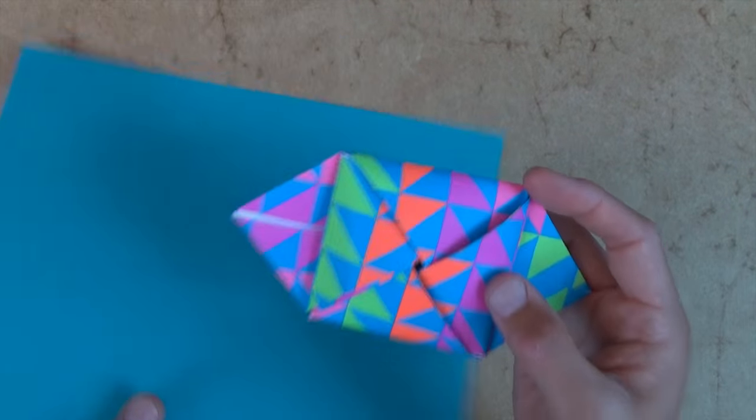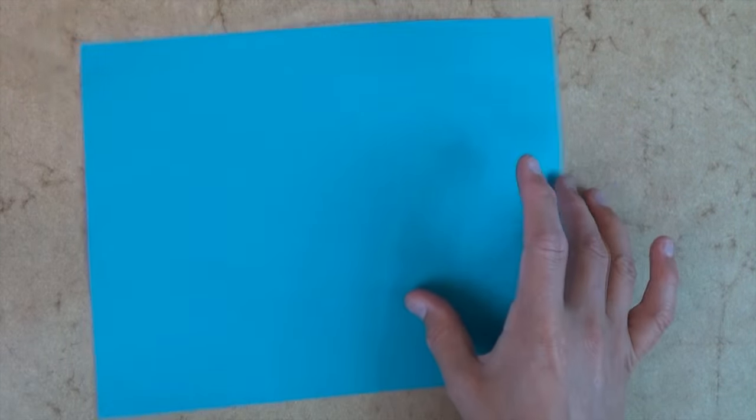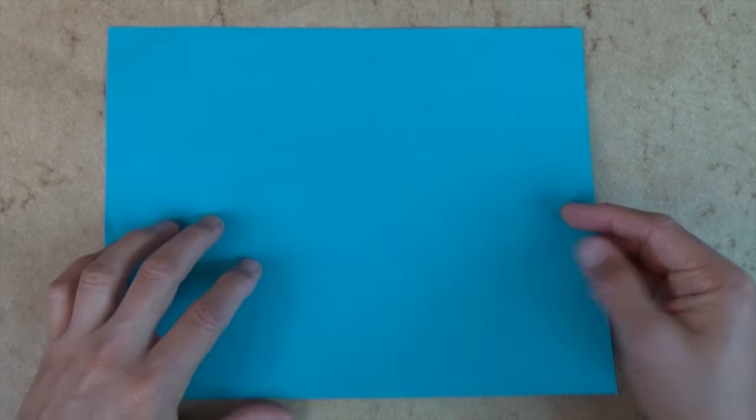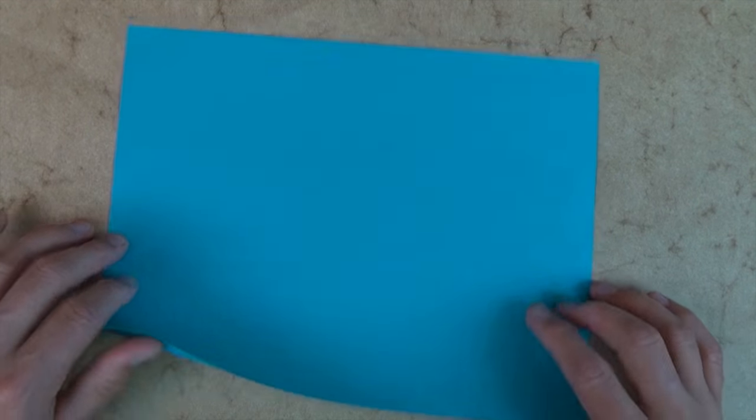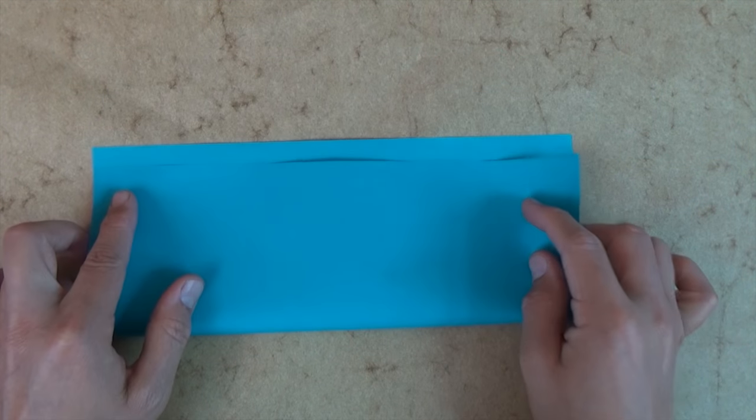Okay, so for this model we're going to use a sheet of printer paper. Eight and a half by eleven or three by four, pretty much any size of printer paper works for this model. So let's start out with the long side nearest you, and let's fold in half.